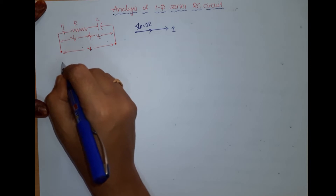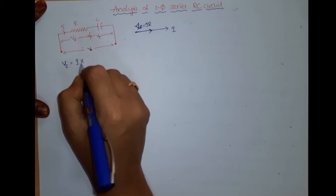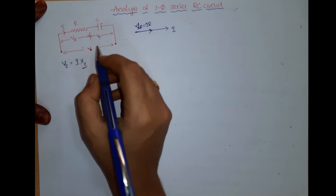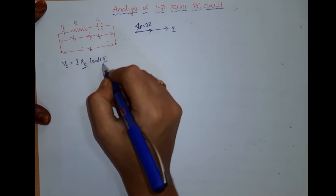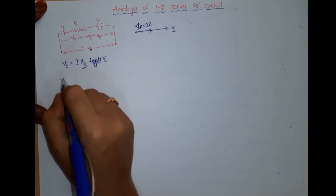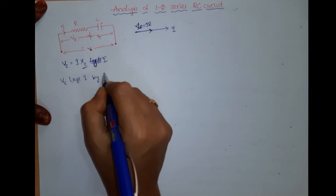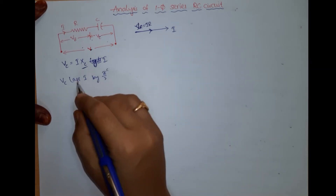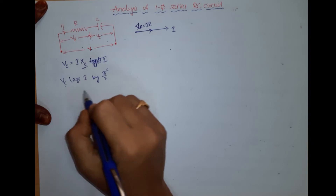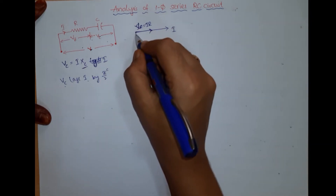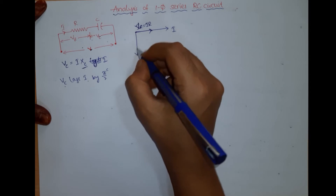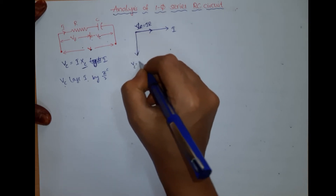We know that the voltage across a capacitor Vc is I into Xc, where Xc is the capacitive reactance. This voltage lags current — in a capacitor, current leads the voltage, so voltage is lagging behind the current by 90 degrees or pi by 2 radians. So that is represented in the phasor like this, where Vc is equal to I into Xc.